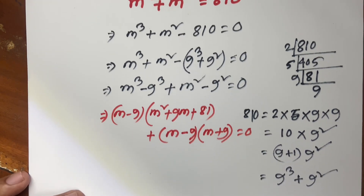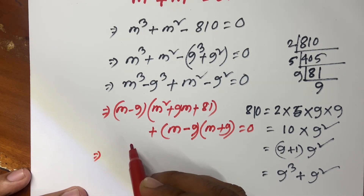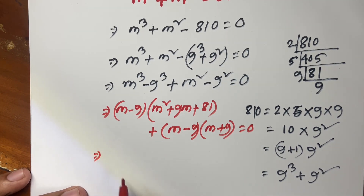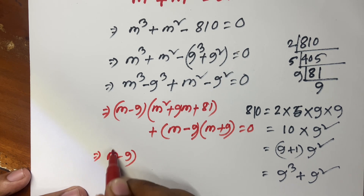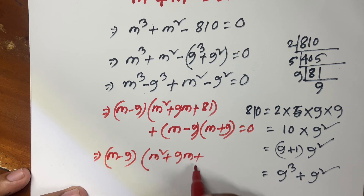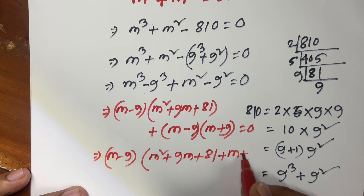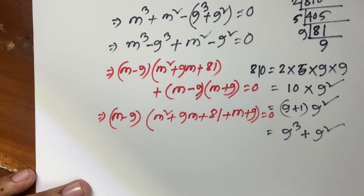And m squared minus 9 squared equals m plus 9 times m minus 9. So m minus 9 is a common factor. Factoring out m minus 9: m squared plus 9m plus 81, plus m plus 9, equals 0.